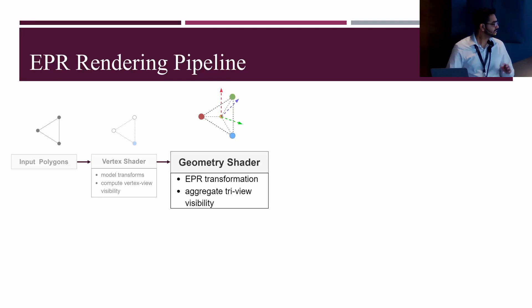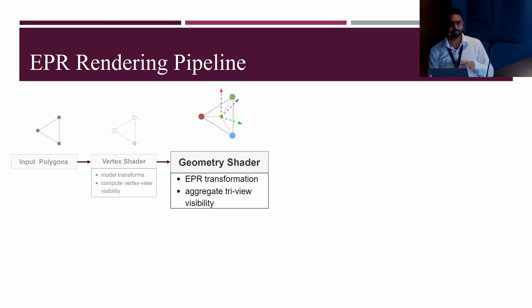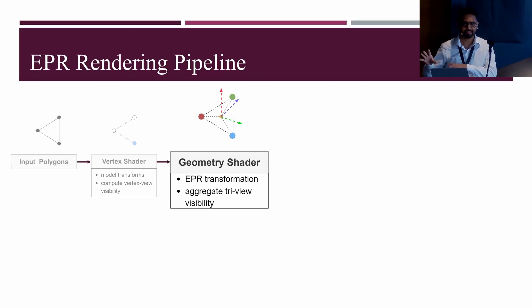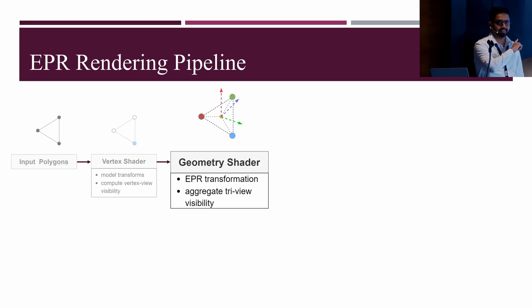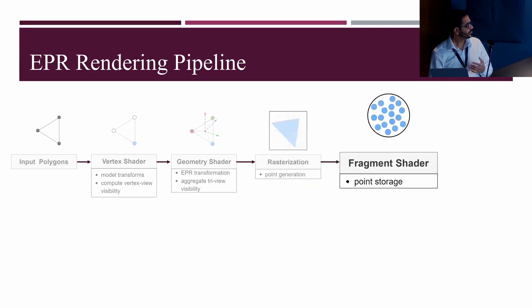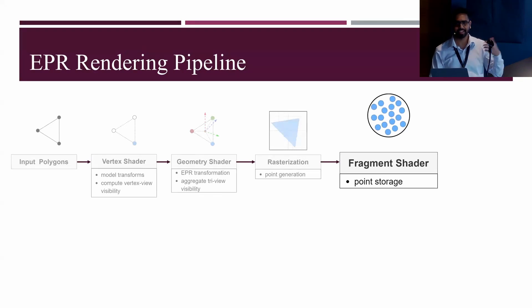The eye-resolution sampling is a significant departure from view-independent rendering. In VIR, every off-screen buffer pixel is sampled; in EPR, every eye buffer pixel is sampled. EPR's point cloud is typically much less dense than VIR because it only details eye buffer pixels rather than all off-screen view buffer pixels. We aggregate triangle-view visibility computed in the vertex shader and pass it to the next stage. The rasterizer generates points from EPR-transformed triangles, and each conservatively rasterized fragment becomes a point in the cloud.